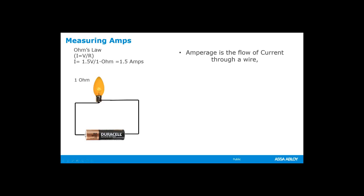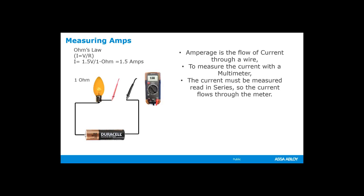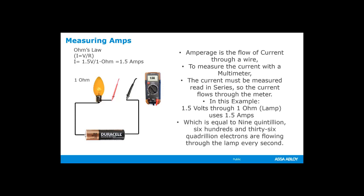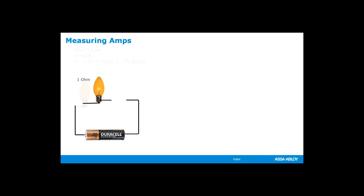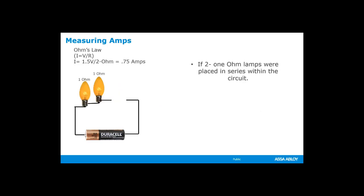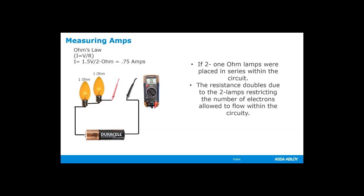Now we're going to talk about measuring amps. This is Ohm's law: current equals voltage divided by resistance. Amperage is the flow of current through a wire. To measure current with a multimeter, the current must be measured in series so that the current flows through the meter. In this example, 1.5 volts through a 1-ohm lamp uses 1.5 amps of current, which is equal to 636 quadrillion electrons flowing through the lamp every second. If two 1-ohm lamps are placed in series within the circuit, the resistance doubles due to the two lamps restricting the number of electrons allowed to flow. In this example, the current flow is only going to be 0.75 amps.